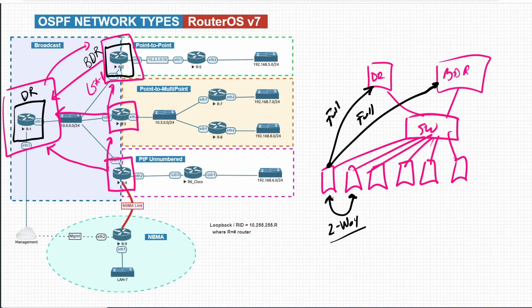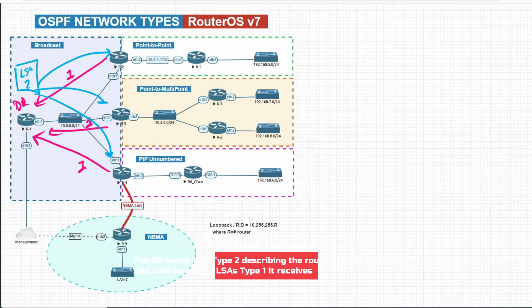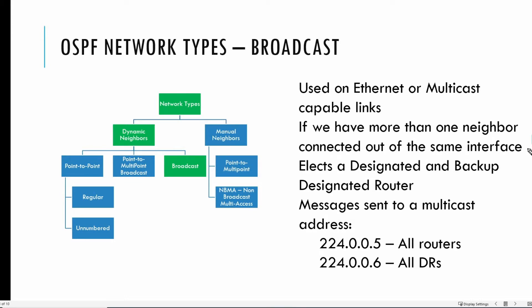LSA Type 2 messages are generated by the DR only. The BDR is just standing by — ready. If the DR goes down, the BDR takes that role and starts sending LSA Type 2 to the rest of the non-designated routers. Once devices in the broadcast network know about the designated router, all messages from non-DR routers are sent to the multicast address 224.0.0.6. The DR sends LSA Type 2 to all routers in the broadcast network using IP 224.0.0.5.